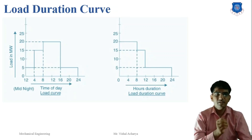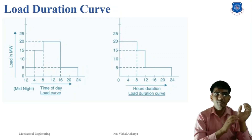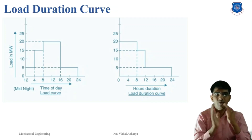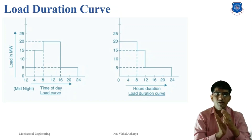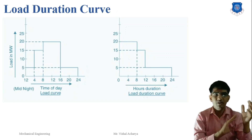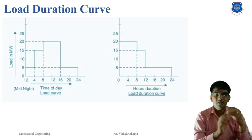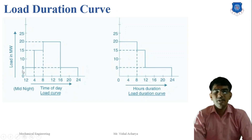Some information from the load duration curve: first, it gives the minimum load present throughout the specified period. Second, it helps in the selection of the base load and peak load power plant. Any point on the load duration curve represents the total duration in hours for the corresponding load and all loads of greater values. The area under the load duration curve represents the energy associated with the load duration. The average demand during a specified period such as a day or month can be obtained from the load duration curve.